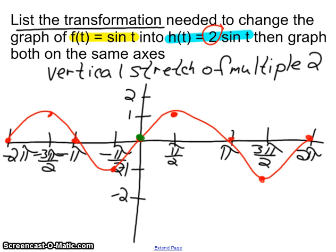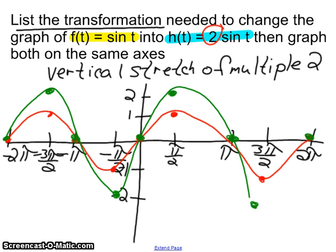Alright, what's zero times two? Zero. What is one times two? One. What is zero times two? Zero. What is negative one times two? Negative two. What do you need to find? What is zero times two? Zero. This is true. What is negative one times two? Negative two. Zero times two. Zero. So, positive 1 times 2 and 0 times 2. So, what does this green line represent? What does this green line represent? This is the vertical stretch of multiple 2 of the sine curve.